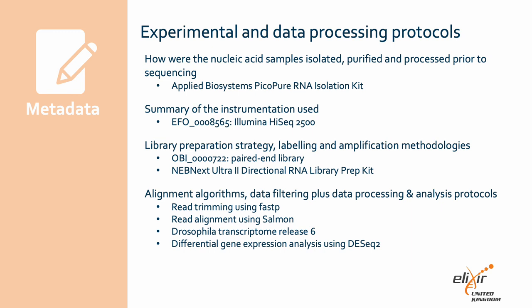The third element of the MIN-seq guidelines deals with essential experimental and data processing protocols. Applied to our example, we provide information on RNA extraction, which was performed using a PicoPure RNA isolation kit; on the sequencer used, which was the Illumina HiSeq 2500; on the library prep protocol, using a NAPNEXT kit for paired-end sequencing; and on data processing protocols, providing details on how we processed the data.